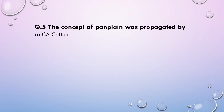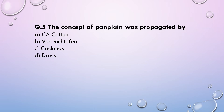Next question: The concept of pan plane was propounded by — (a) C.A. Cotton, (b) Richthofen, (c) Crickmay, or (d) Davis. The answer of this question will be Crickmay. Crickmay propounded the concept of pan plane, or panplanation.